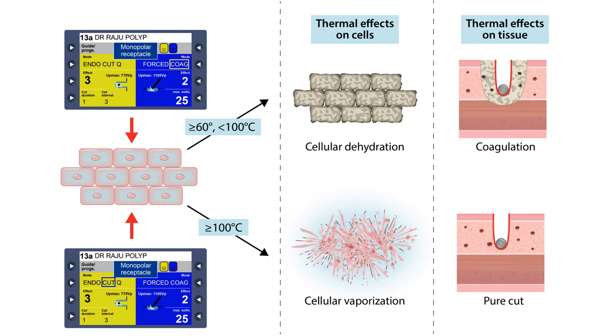So this is how a cut current and a coagulation current create their effect: by vaporization and coagulation by dehydration and coagulation of the proteins.